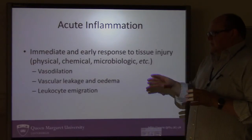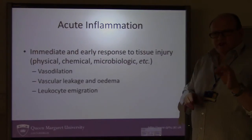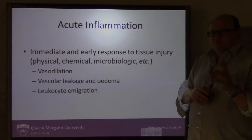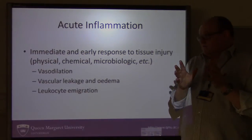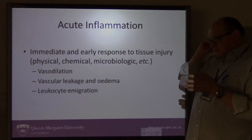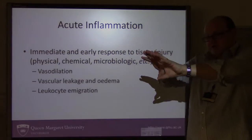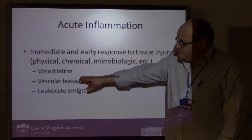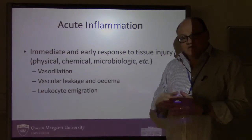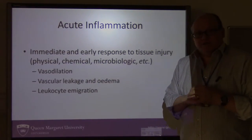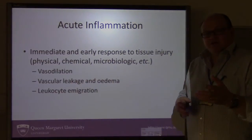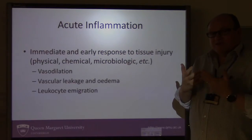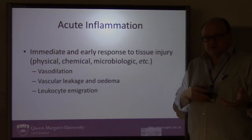If there is an acute inflammation, that means an immediate and very early response to tissue injury — which can be physical, chemical, or microbiological. Acute inflammation initiates vasodilatation, an opening of the blood vessels; vascular leakage or oedema; and leukocyte emigration, leukocytes moving to the area where the inflammation and damage has happened. You can see why the area becomes red — vasodilatation opens up the blood vessels, more blood floods in, causing redness. Similarly, if cells leak, fluid leaks out, you get extracellular fluid buildup and oedema, causing the swelling associated with one of the four cardinal signs.